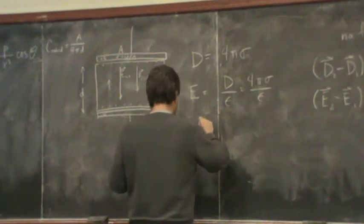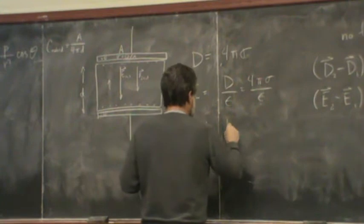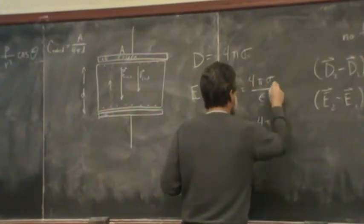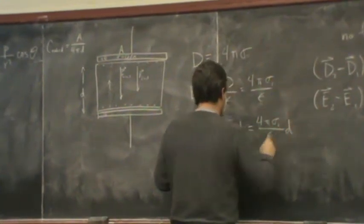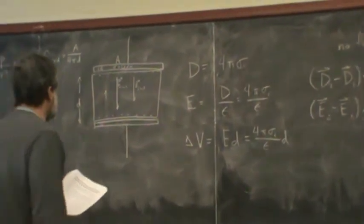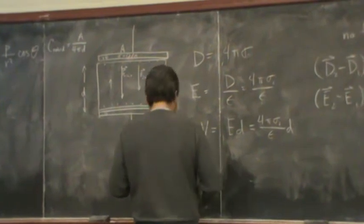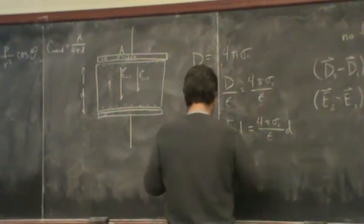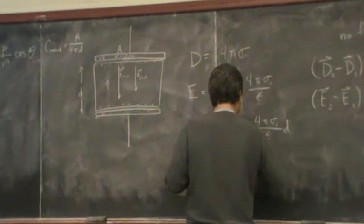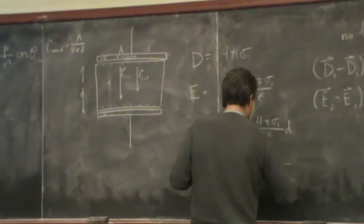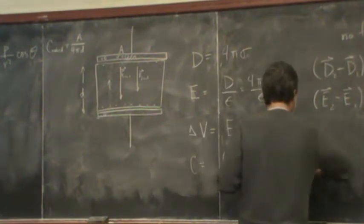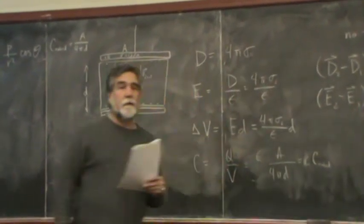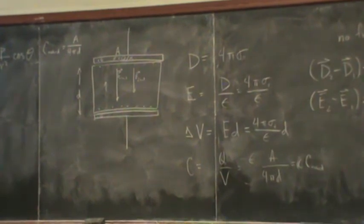So then from this I know the electric field. The potential is the field times the distance. So that's four pi sigma free over epsilon times D. And then coming back to the capacitance for this capacitor, the capacitance is still external charge applied over the voltage, which comes out to be epsilon A over four pi D or epsilon C naught.